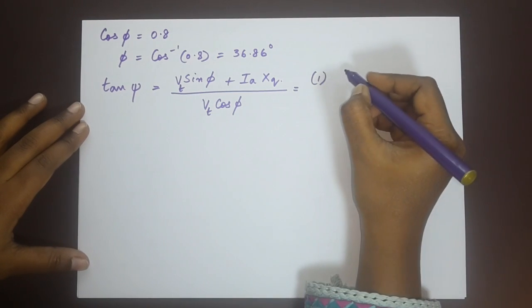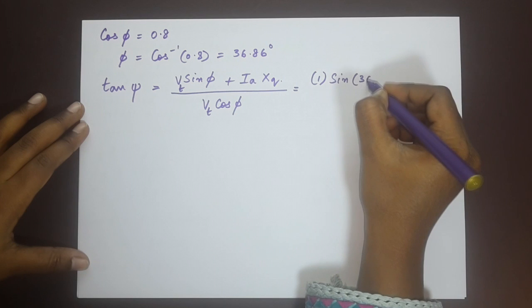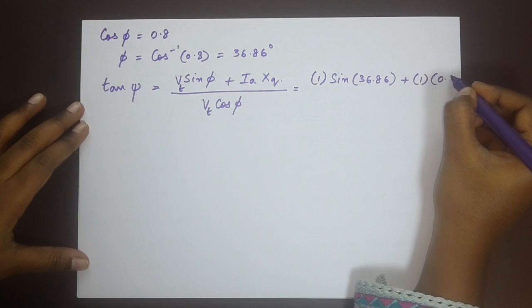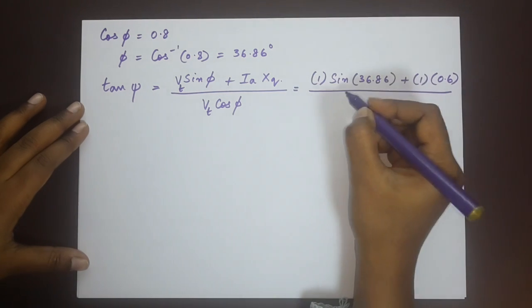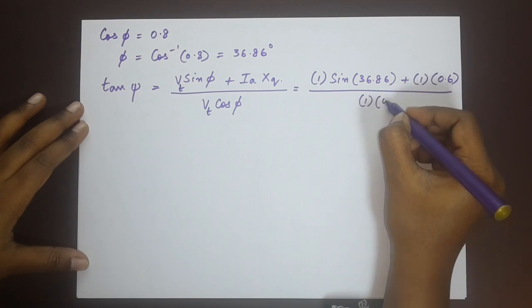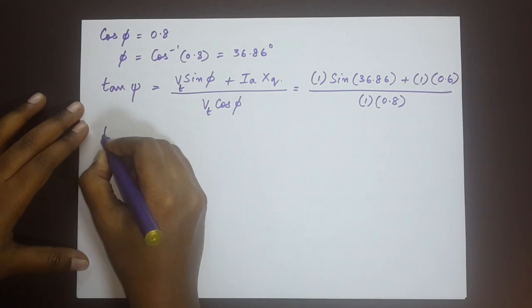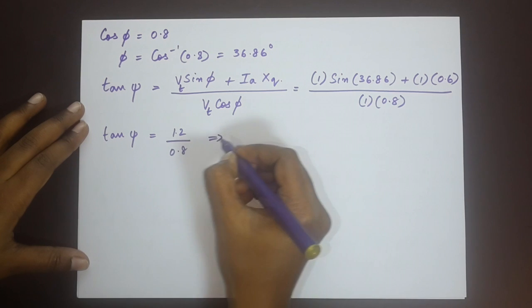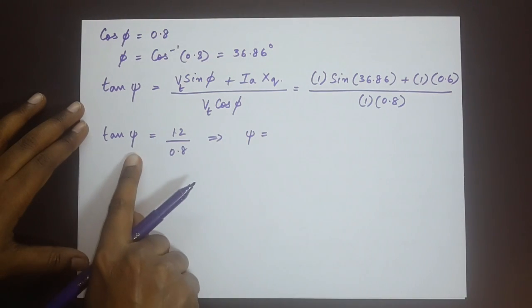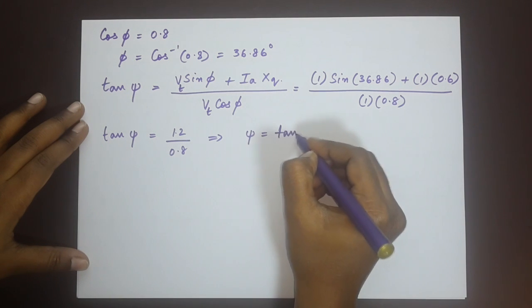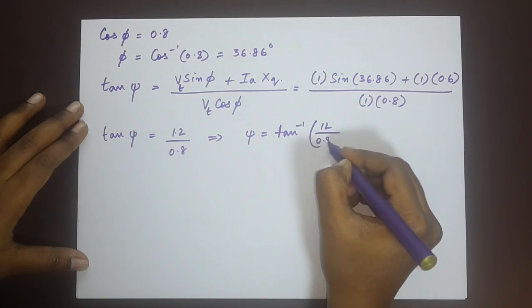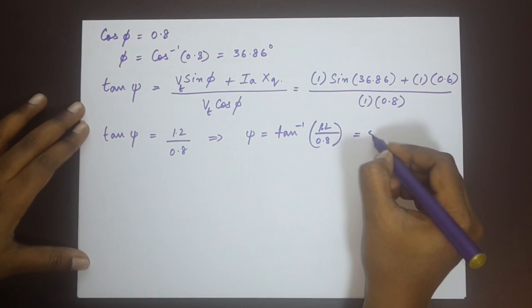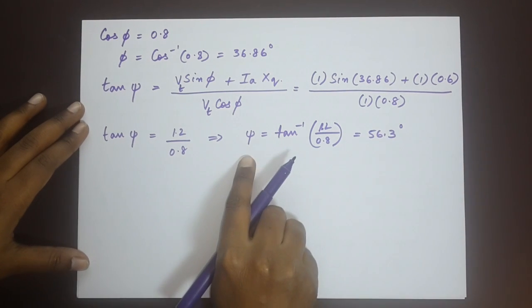The armature current is 1 PU and the terminal voltage is 1 PU as well. If we substitute all of these values into this we will be able to find out what psi is. Vt is 1, sin of angle 36.86 plus Ia is 1, Xq is 0.6. That is the quadrature reactants given to us, 1 times 0.8. So tan psi is 1.2 divided by 0.8 which gives us psi would be tan inverse of 1.2 by 0.8, 56.3 degrees is what psi is.